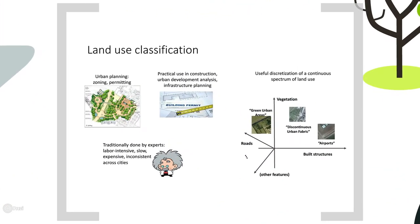In this work, we focus on a key type of survey data that is important for understanding cities: land use specifications. This is a key input to urban planning applications such as zoning and permitting or infrastructure investments. It is traditionally done by experts using disparate data sources such as surveys and tax assessor databases, which may not be available at every city, especially in developing regions.